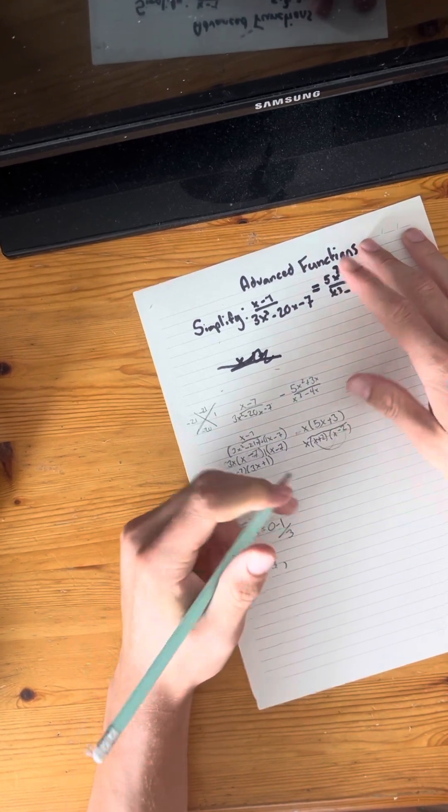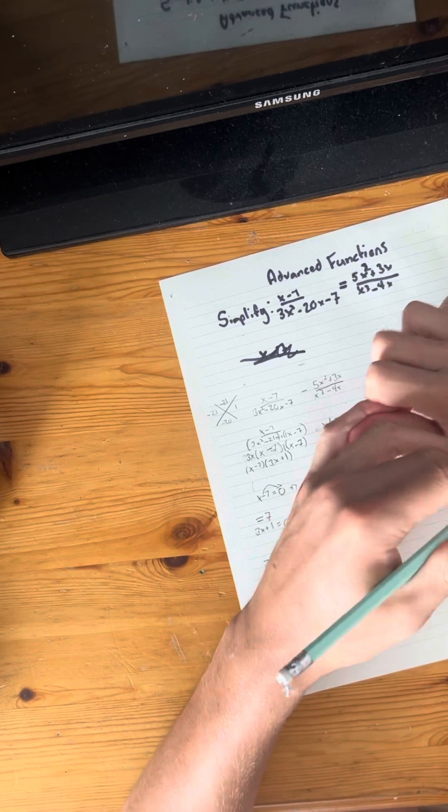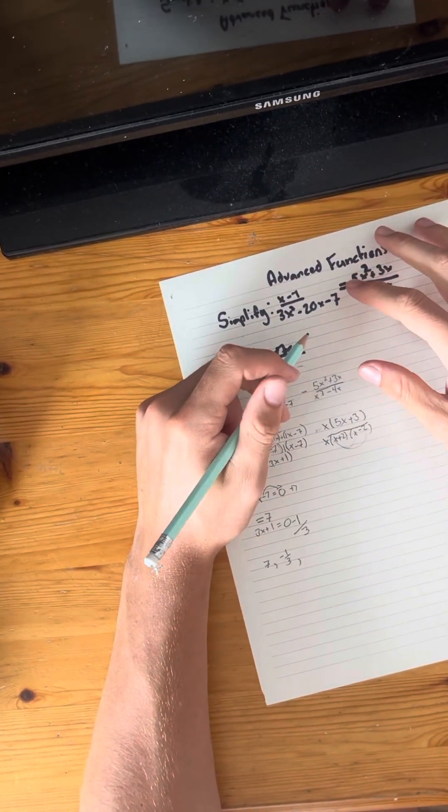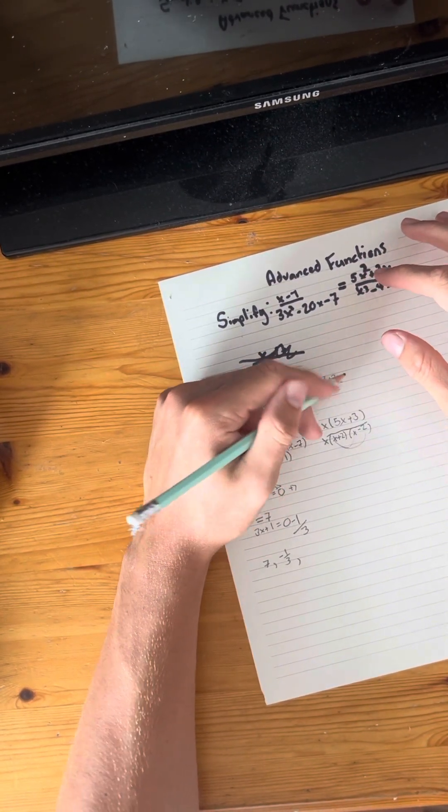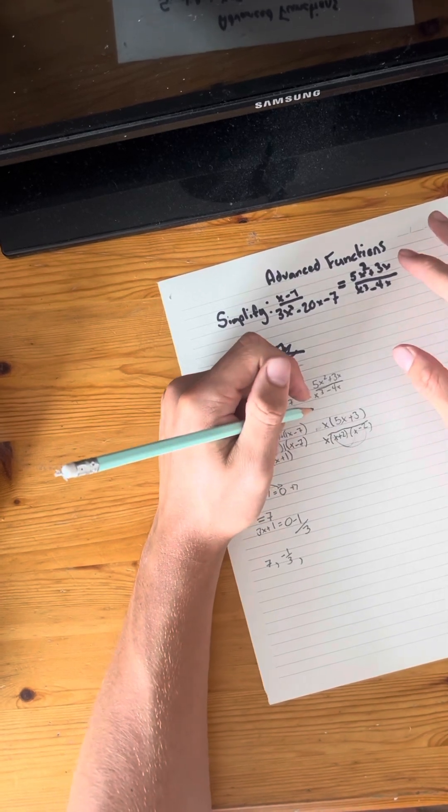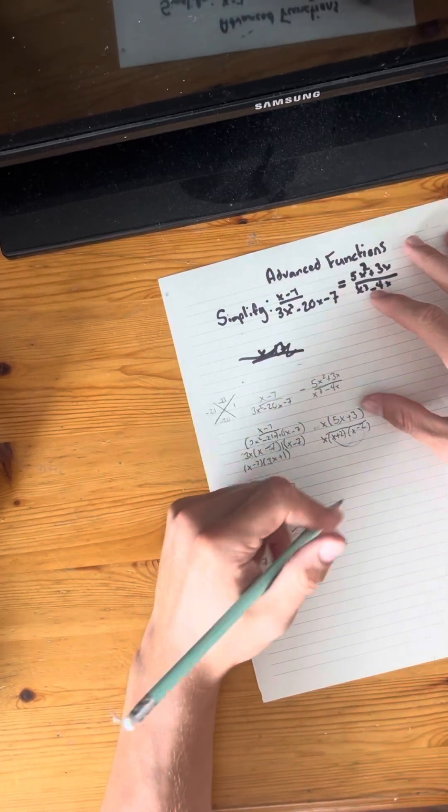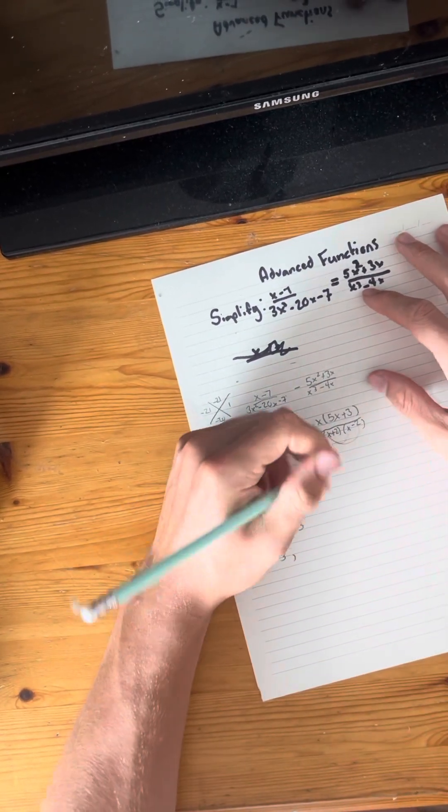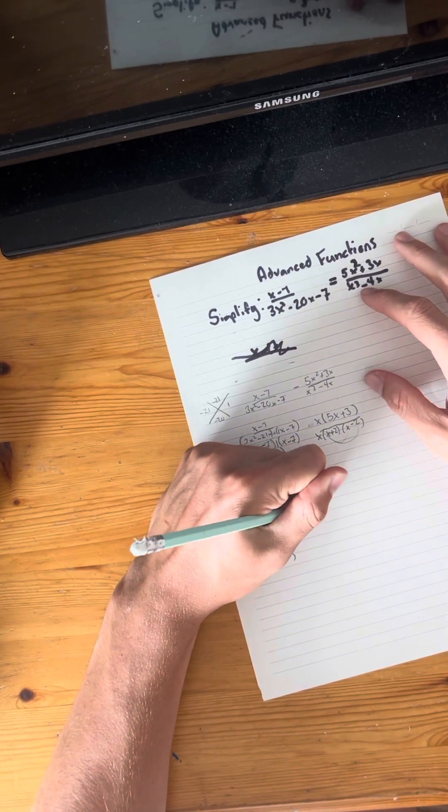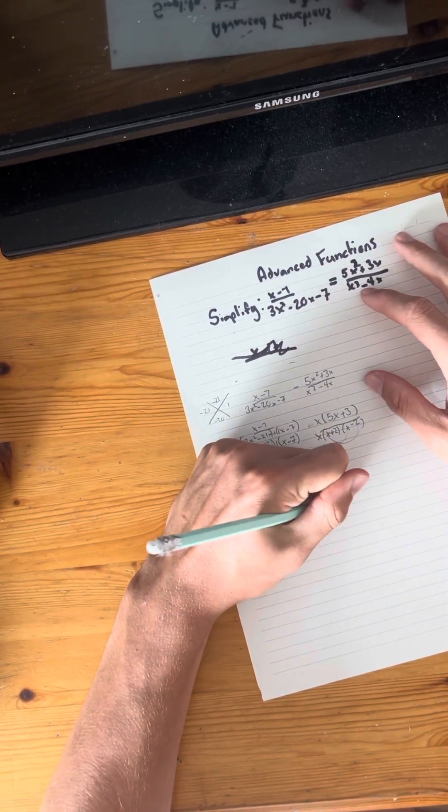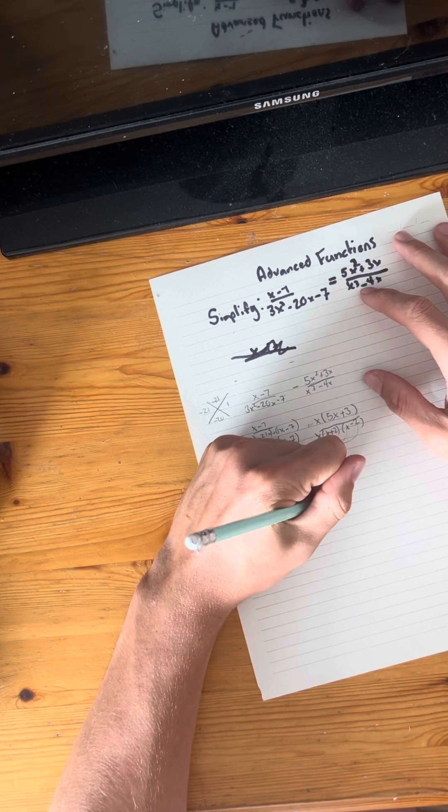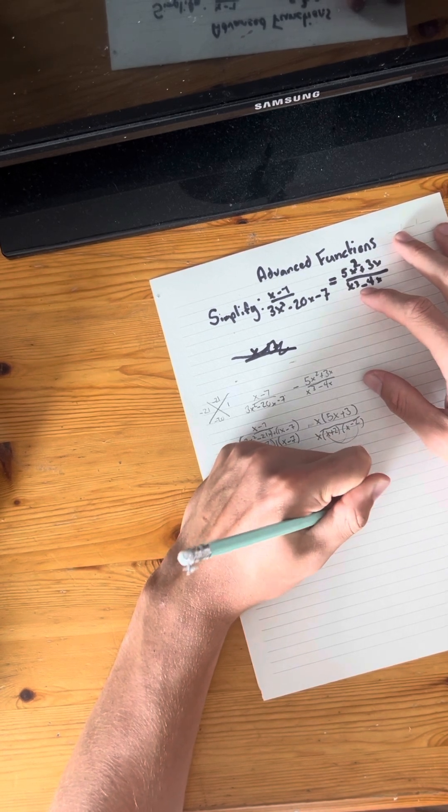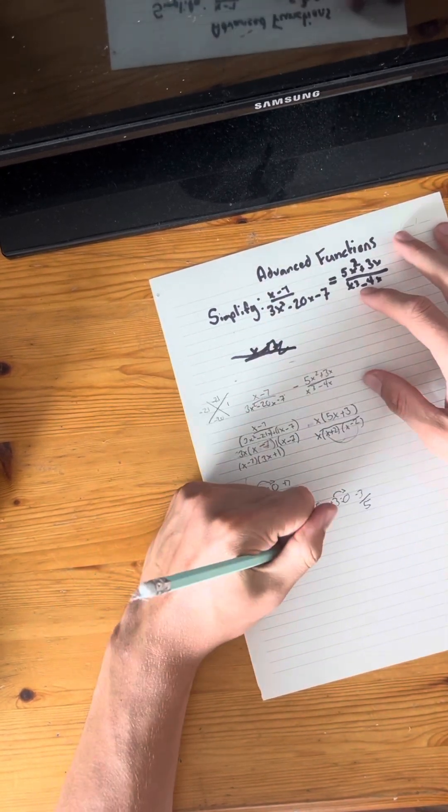Next one over here is 5x squared plus 3 squared. We have the factor version over here, so that would be same situation over here. 5x plus 3 equals zero, and then bring that over, negative three over five. That would be negative three over five.